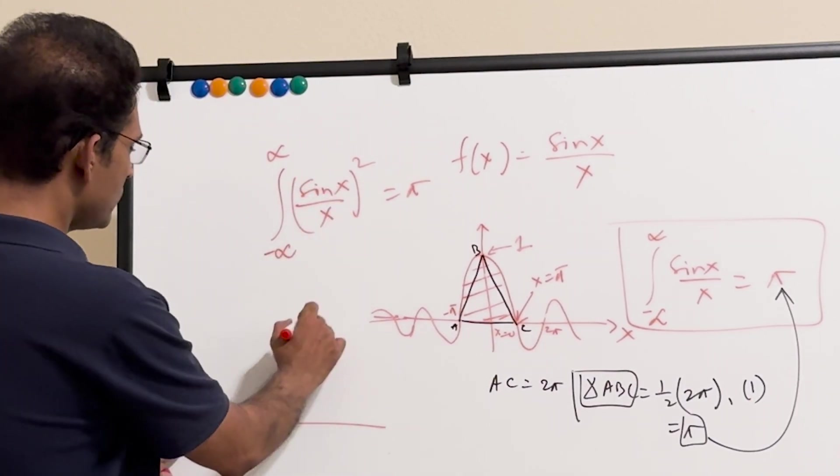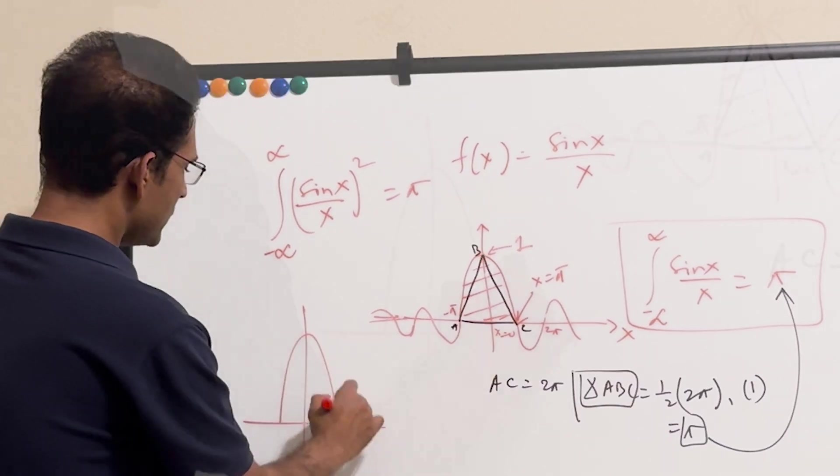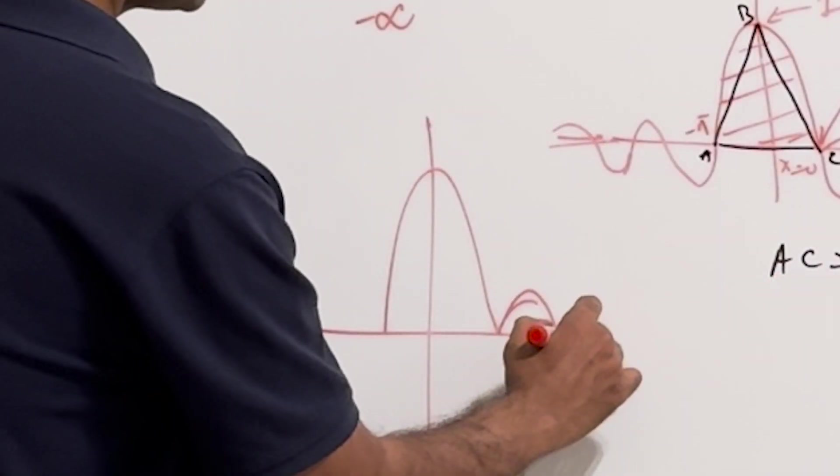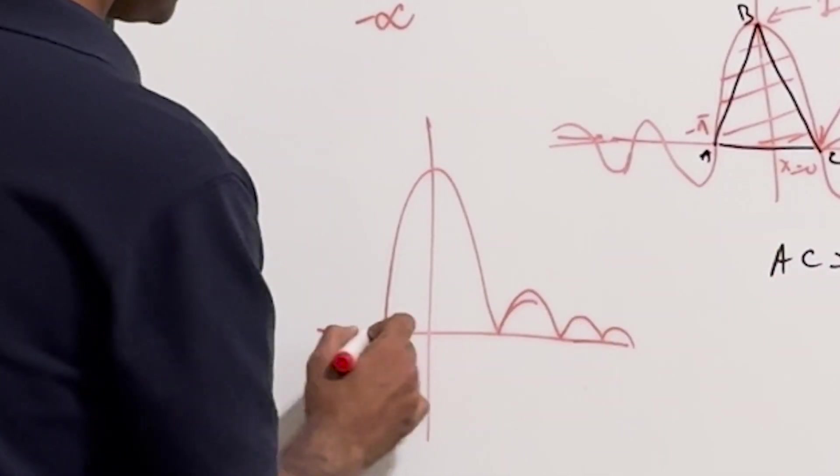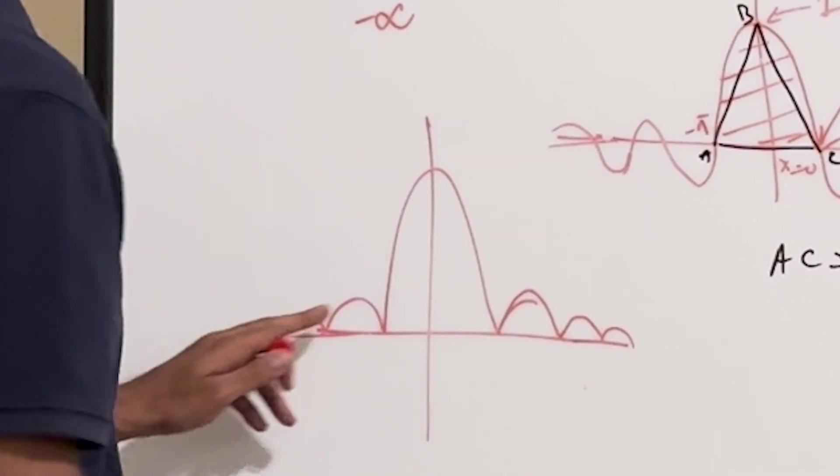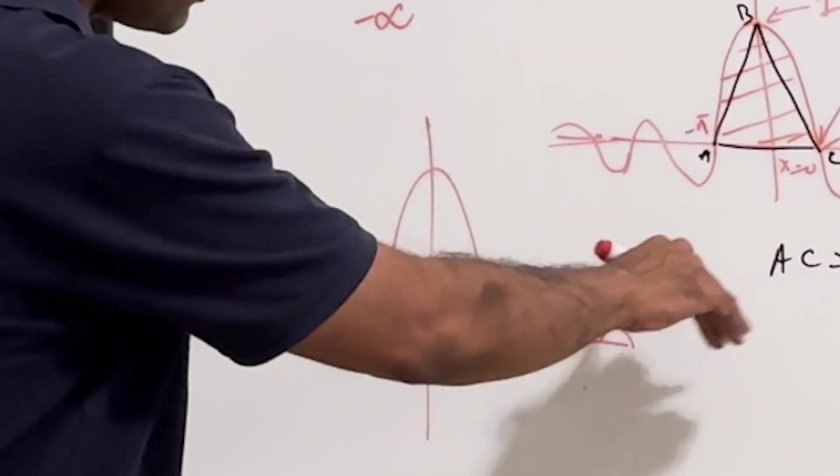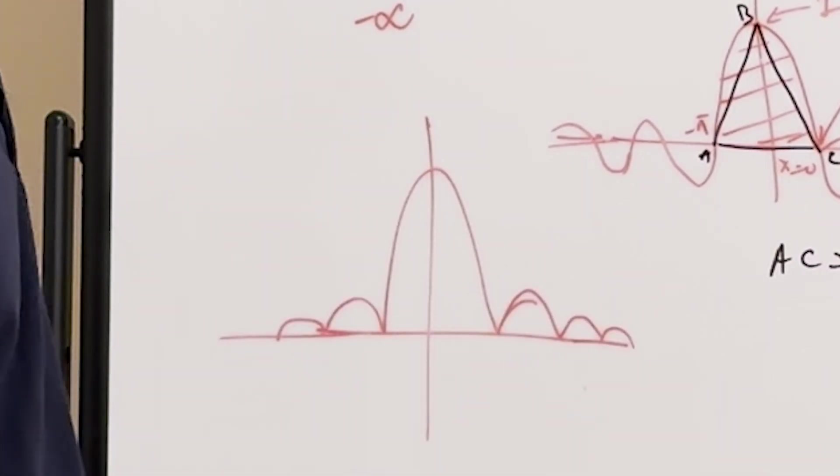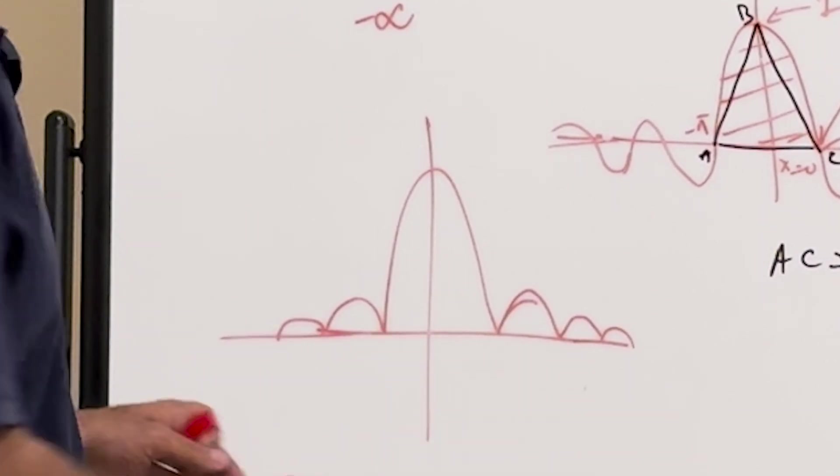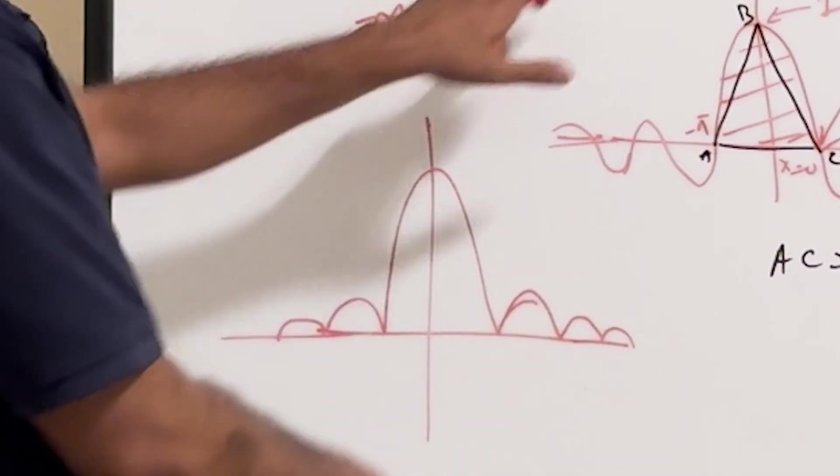And how does this look like? Sin x squared over x squared? It's always a positive function, first of all. So if you plot it, it should be something like this. It's always positive, you see? And it's gradually falling down. And the sum of all these areas, if you add up all the areas of the lobes, you get pi.